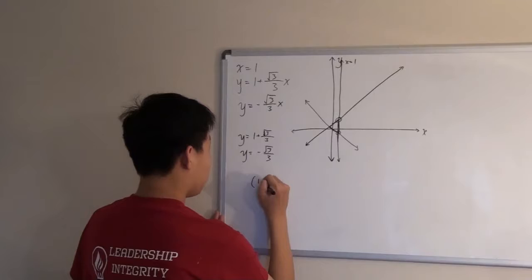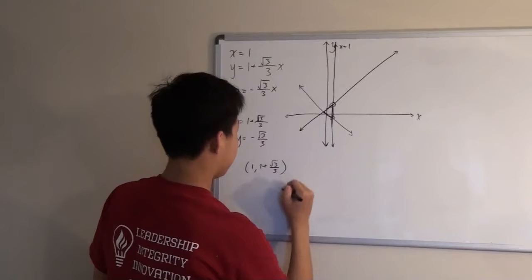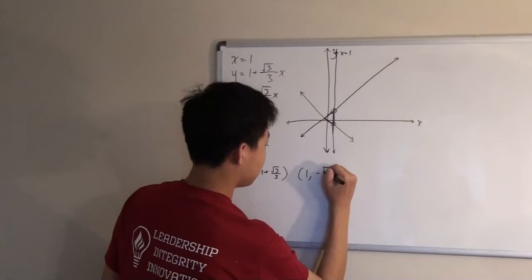So, the two coordinates would be (1, 1 plus root 3 over 3) and (1, negative root 3 over 3).